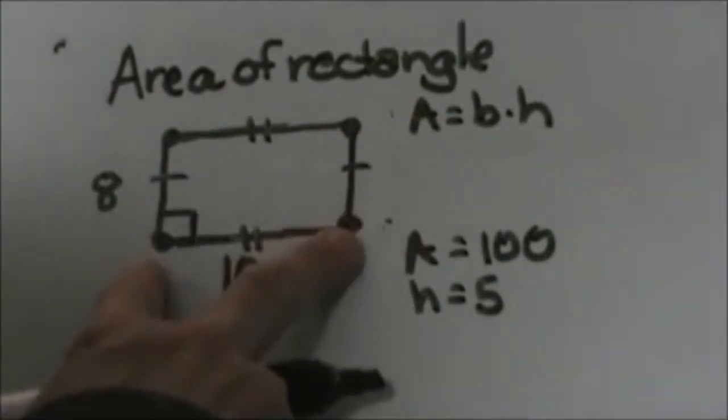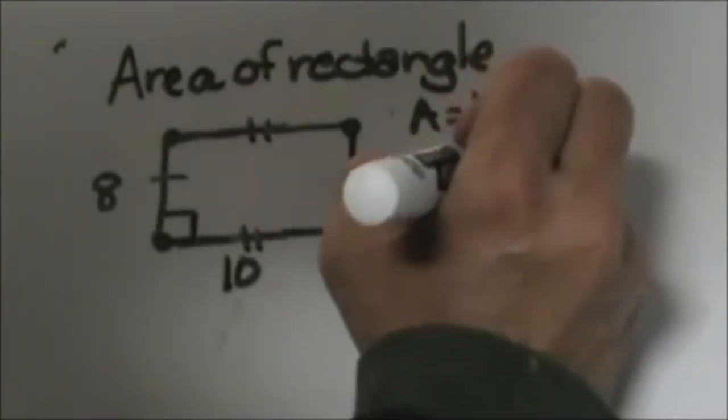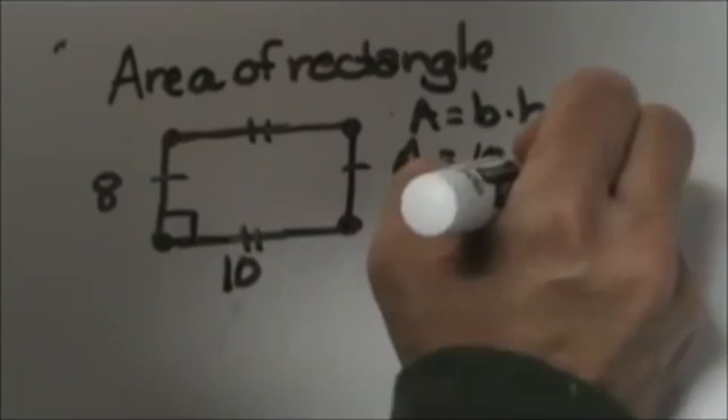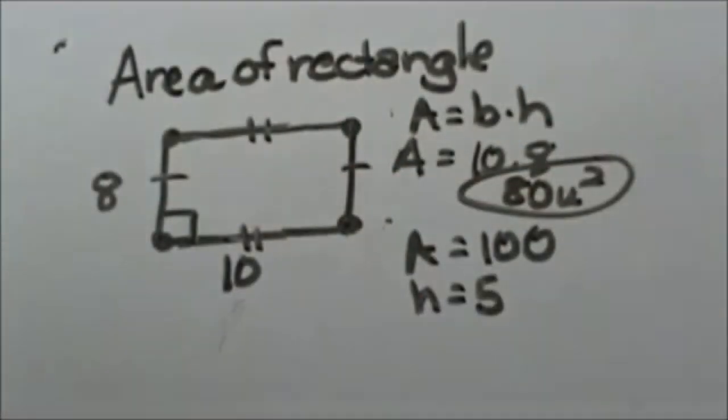We're going to plug in the base times the height. We're going to plug in 10 times 8 and get an area of 80 square units. So 80 is the answer to that one.